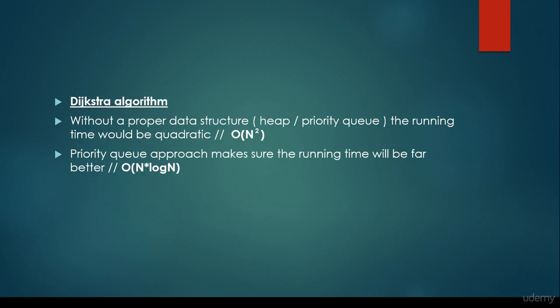So let's consider two important examples. First, Dijkstra's shortest path algorithm. Without a proper data structure, a heap or a priority queue, the running time would be quadratic, so O(n²). So if we would like to find the shortest path in a graph where the number of edges is equal to n, then the time complexity of this algorithm is going to be O(n²).